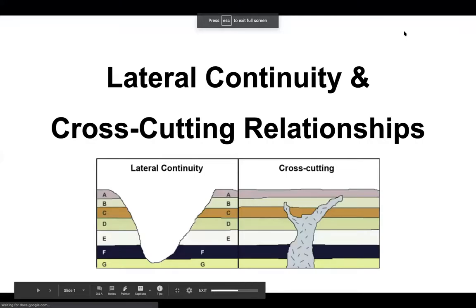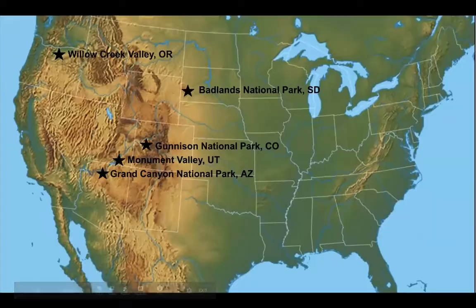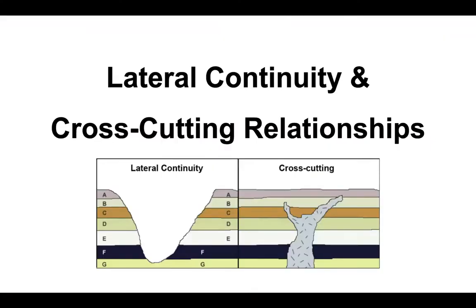What you're looking at is an example of lateral continuity and cross-cutting relationships. On the left, you see lateral continuity. The principle of lateral continuity states that layers of sediment initially extend laterally in all directions — in other words, they are laterally continuous. They may cover a very broad area, especially if they form at the bottom of ancient seas.